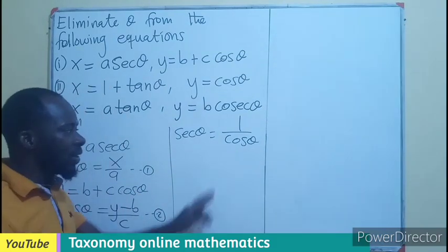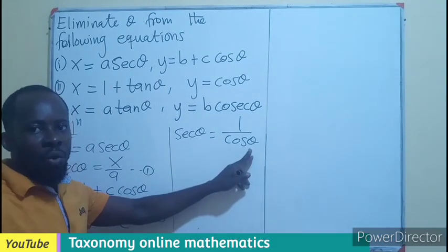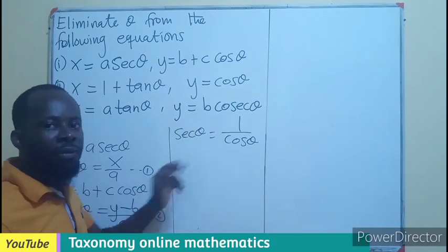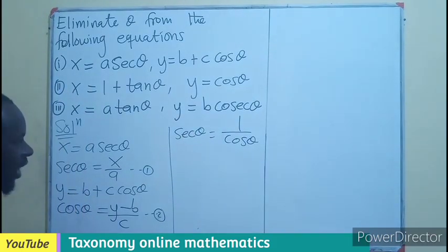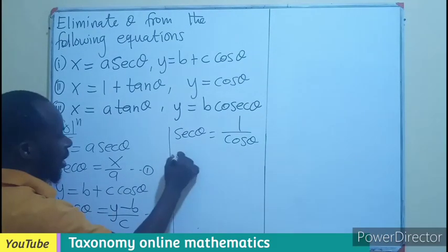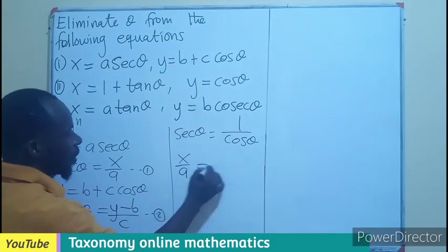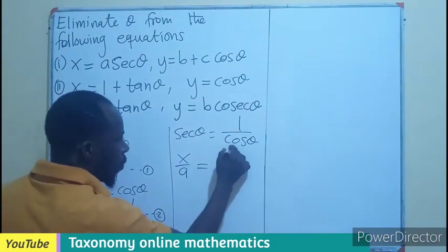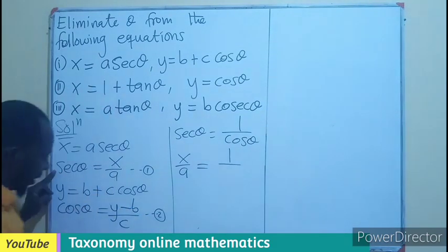In other words, cos theta is equal to the inverse of sec theta. So whenever I see sec theta in this expression, I will replace it. X over A equals 1 over cos theta.